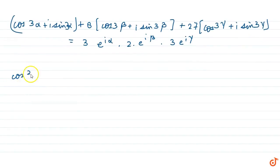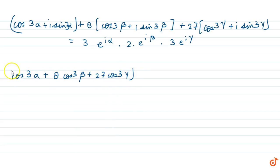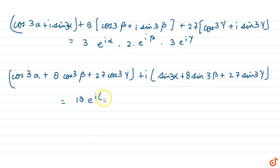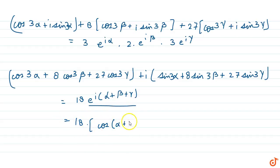Applying these results, the left-hand side becomes: 3 cos 3 alpha plus 8 cos 3 beta plus 27 cos 3 gamma, plus iota times sin 3 alpha plus 8 sin 3 beta plus 27 sin 3 gamma. The right-hand side equals 18 e to the power iota times alpha plus beta plus gamma, which we can write as 18 times cos of alpha plus beta plus gamma plus iota sin of alpha plus beta plus gamma.